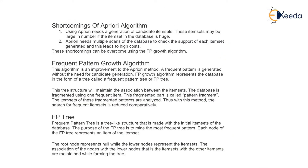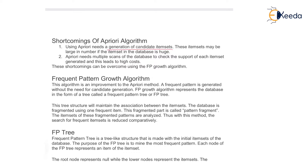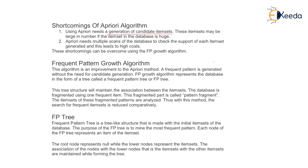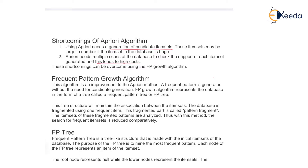First, we will see some shortcomings of the Apriori algorithm. Using Apriori, it needs the generation of a candidate item set. These item sets can be large if the number of item sets in a database is huge. Apriori needs multiple scans of a database to check the support of each item set generated, and this leads to high cost.